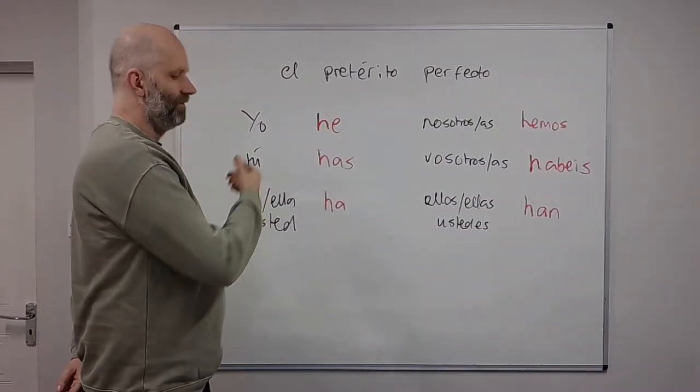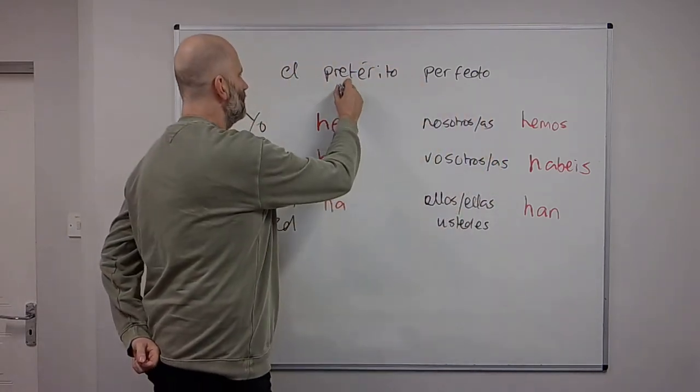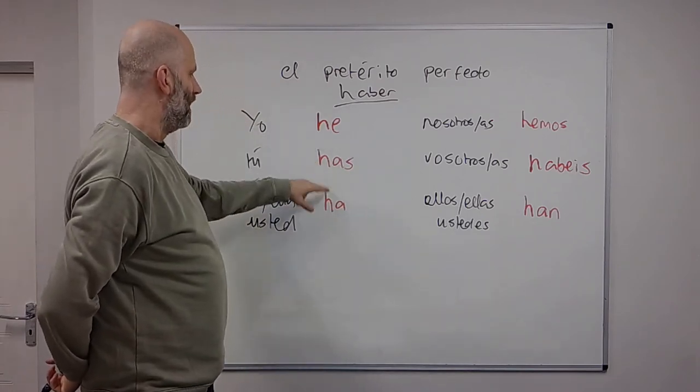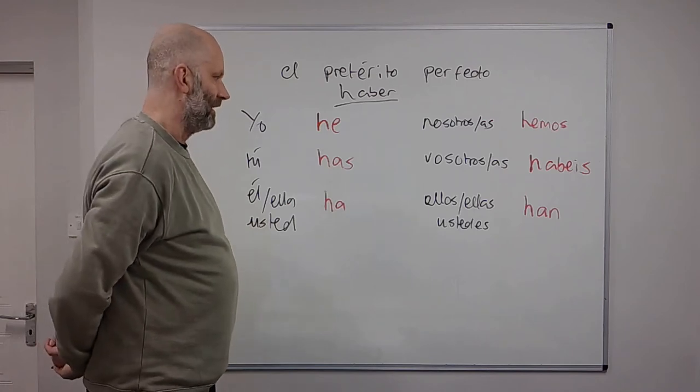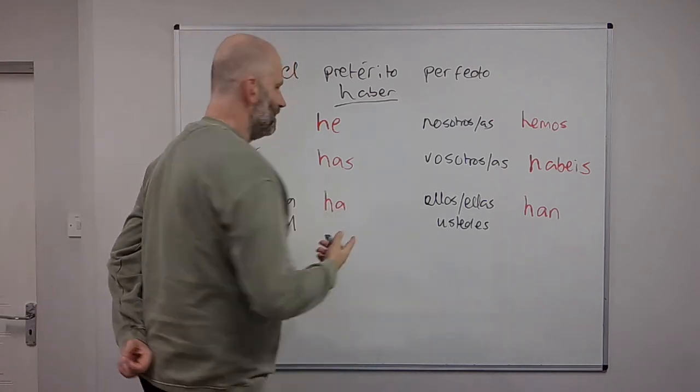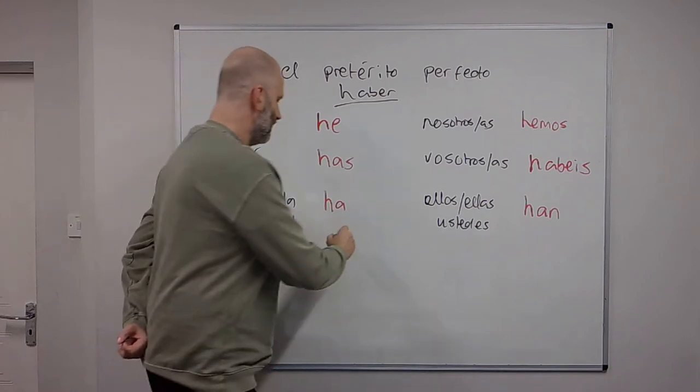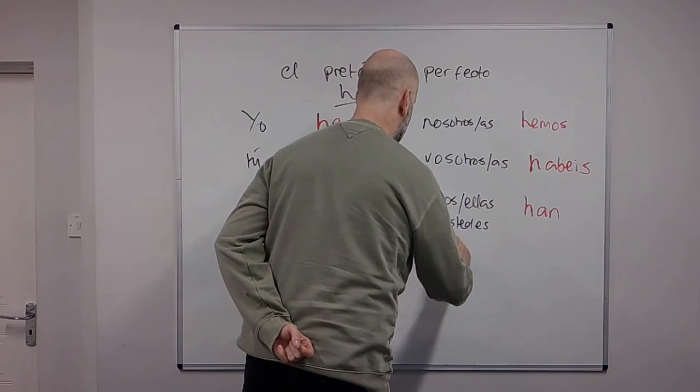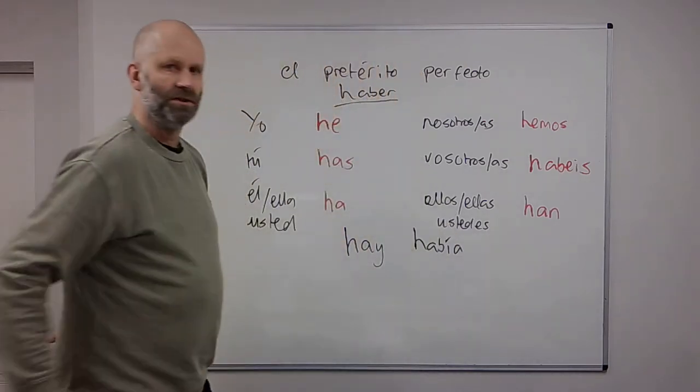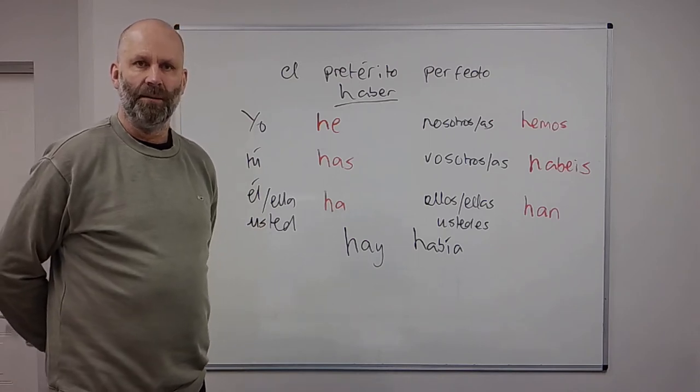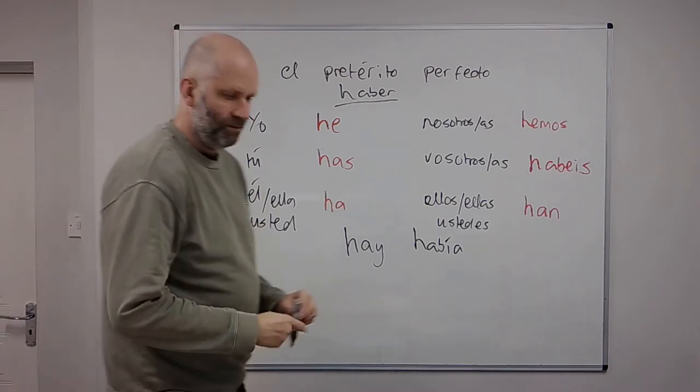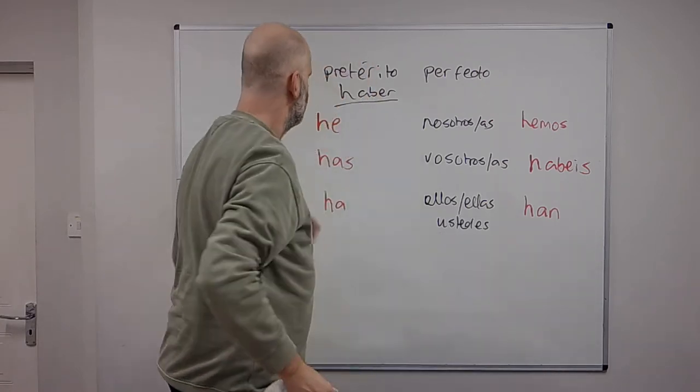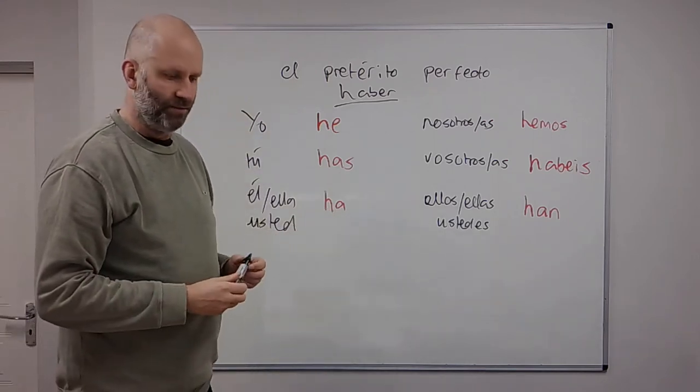Okay, so here we have the verb haber. Now haber, this is the present tense, but it's not used as a normal verb. You don't just say he or has or ha on its own, it doesn't mean anything. You may have come across the verb haber, certain forms of it, in the impersonal hay, there is or there are, or había, there was or there were. So you've also got there will be, habrá, there's going to be, va a haber.